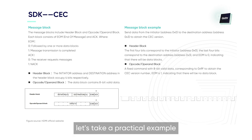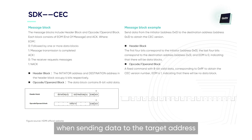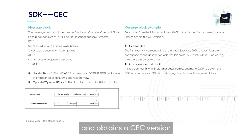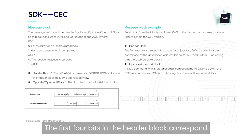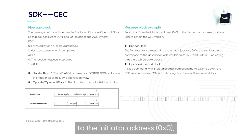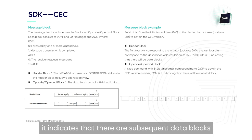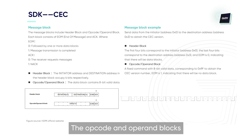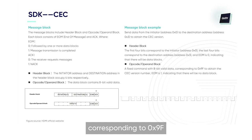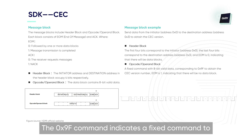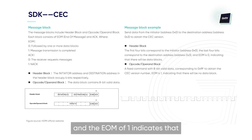Let's take a practical example. The initiator is concatenated with 0x3 when sending data to the target address to obtain a CEC version. The first 4 bits in the header block correspond to the initiator address 0x0, and the last 4 bits correspond to the target address 0x3. If EOM is 0, it indicates that there are subsequent data blocks. The opcode and operand blocks contain 8-bit valid data, corresponding to 0x9F. The 0x9F command indicates a fixed command to obtain the CEC version number, and EOM of 1 indicates that there are no subsequent data blocks.